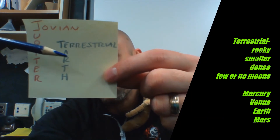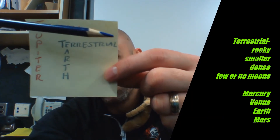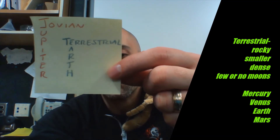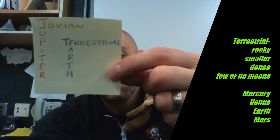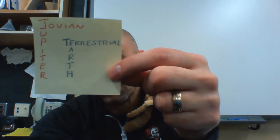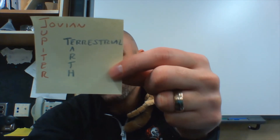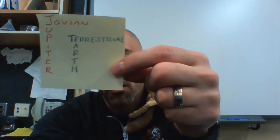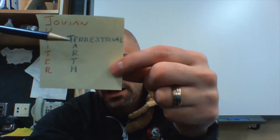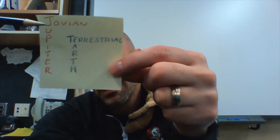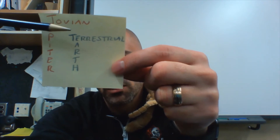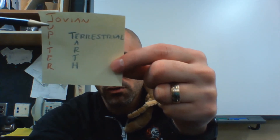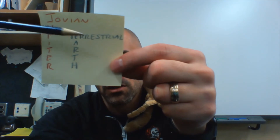The Earth-like planets are called terrestrials — they're rocky, smaller, more dense, and have few or no moons. That wording usually comes up on questions, so make sure you have all of that memorized. They usually ask just one question: Jovian — gassy, big, Jupiter-like; terrestrial — rocky, smaller, Earth-like.